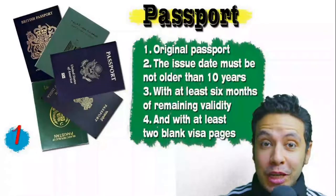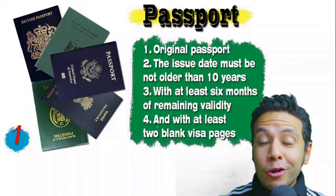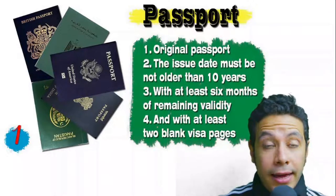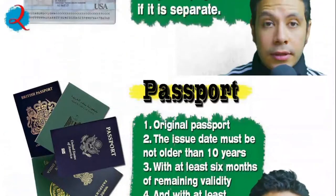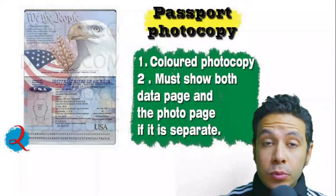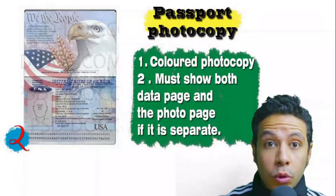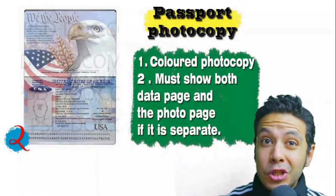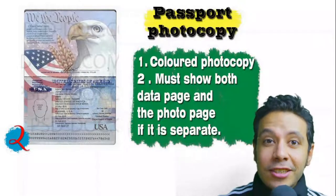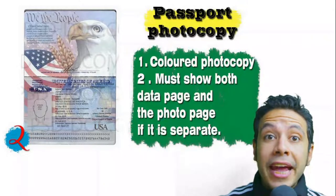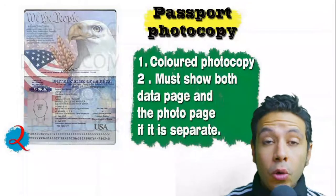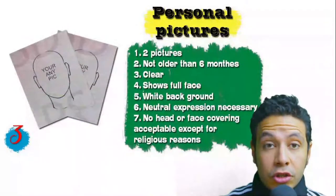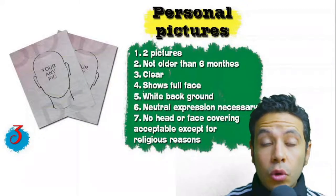Speaking about your passport: it must be original, not older than 10 years, with at least six months of remaining validity and at least two blank visa pages for stamps. In many cases you will also need a passport photocopy — one or more copies, preferred in color — showing both the data page and photo page. In some cases you may be required to photocopy every single page.